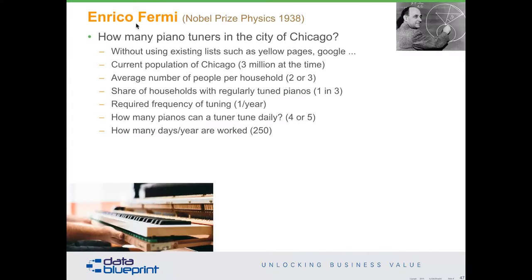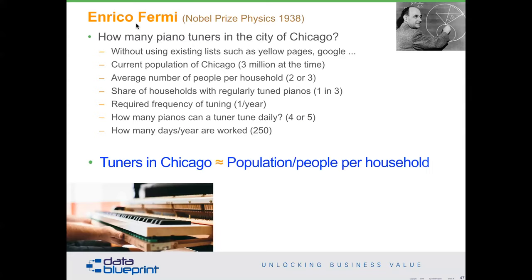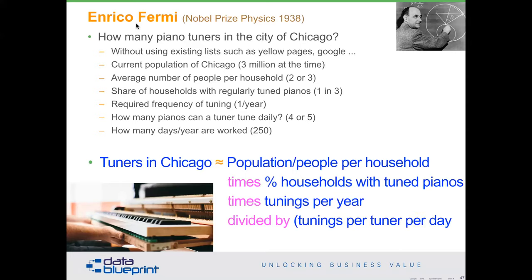When I say formalizing stuff helps, here's an example Hubbard uses from the book: how many piano tuners are there in the city of Chicago? Most people say they don't know. But going back to 1938: population of Chicago was 3 million, average people per household were 2-3, one in three households had a regularly tuned piano, required tuning is once per year, a tuner tunes 4-5 pianos per day, and there are roughly 250 work days per year. Therefore, piano tuners ≈ population / people per household × percentage of households with tuned pianos × tunings per year / tunings per tuner per day / work days per year. Do we have the right answer? No. But do we have information to understand the size of the challenge? Yes.